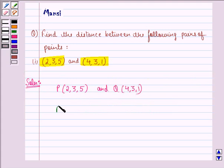So, we can say that PQ, that is distance between P and Q, is given by square root of (4 minus 2) the whole square plus (3 minus 3) the whole square plus (1 minus 5) the whole square.